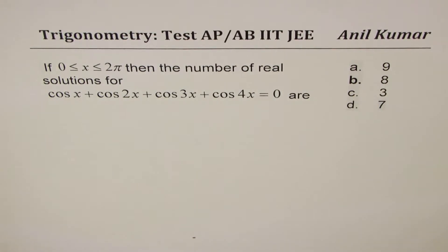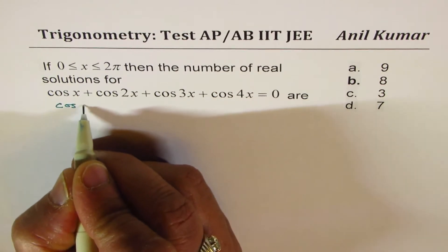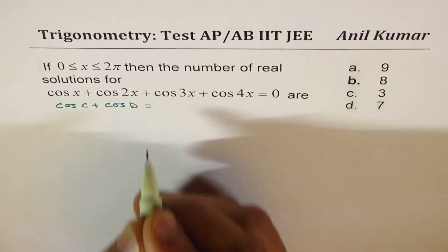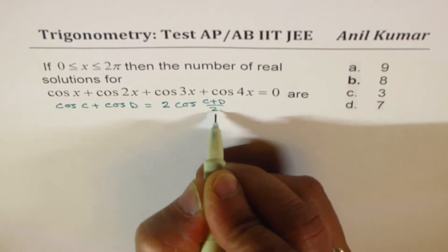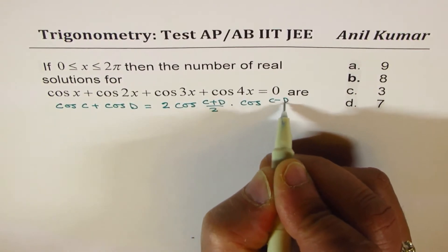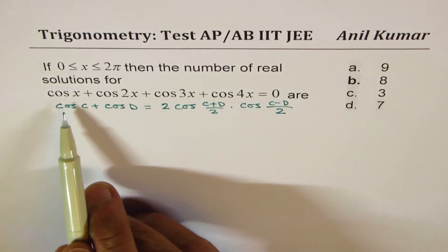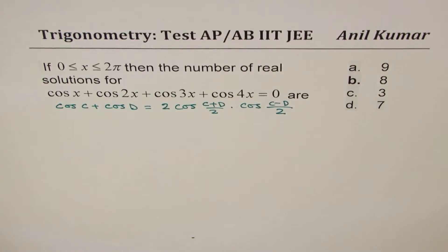You can always pause the video, answer the question, and then look at my solution. In this particular question we are going to use a trigonometric identity known as cos C + cos D, which equals 2·cos((C+D)/2)·cos((C−D)/2). This identity is called the sum-to-product identity — it's very common and I'll provide a link for it.